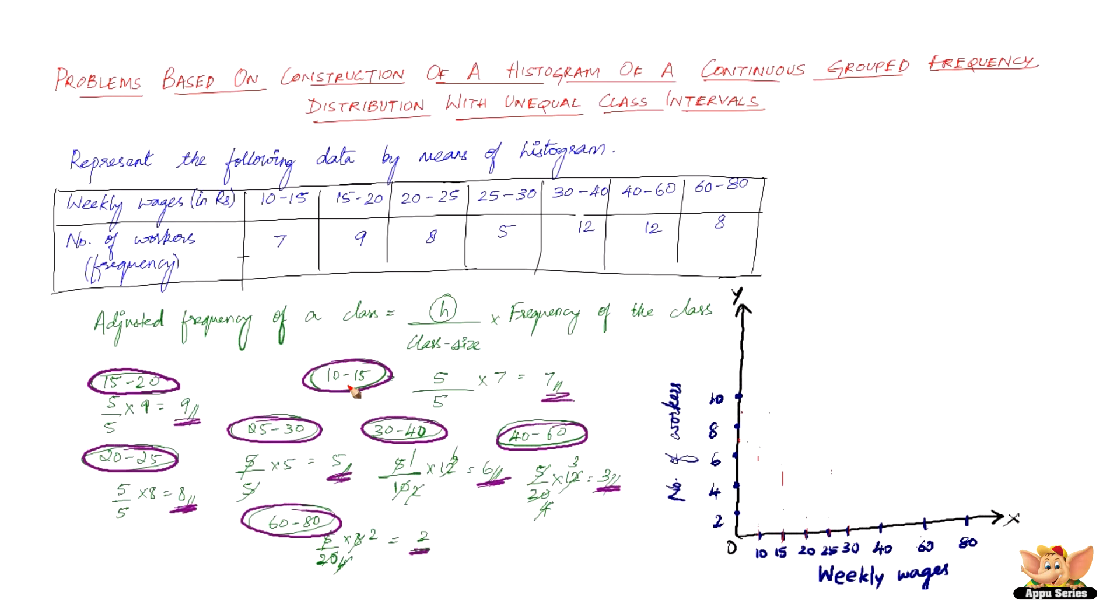So the first one, 10 to 15, we've got 7. That is here. The next one is 15 to 20, we've got 9. No changes here, no adjusted frequencies because the size of the class is just 5. And then we've got 20 to 25, which is 8. And then we've got 25 to 30, which is 5.